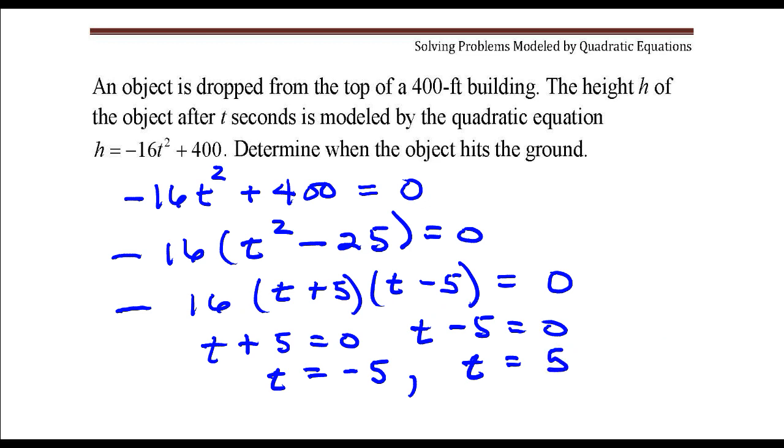Now, because t represents time, this would not make much sense if time is negative, so we are going to throw that one out. Your answer here is t is equal to 5 seconds, so it takes 5 seconds after that object is dropped off the building to hit the ground.